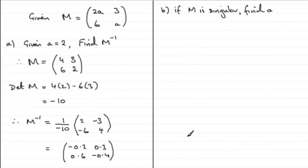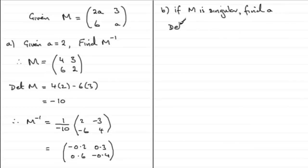Now for this next part, Part B, we're told that if this matrix M is singular, we've got to find A. To do this, we should know that the determinant for singular matrices must equal 0. So the determinant of M must equal 0. Therefore, determinant M equals 0.